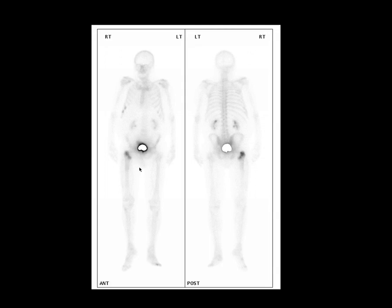In the past, bone scans were used to evaluate patients who had normal plain radiographs but a very high clinical index of suspicion for femoral neck fracture, and could reveal these with a high degree of sensitivity. But generally speaking, MRI is used for that purpose now, although we are occasionally still asked to perform it.